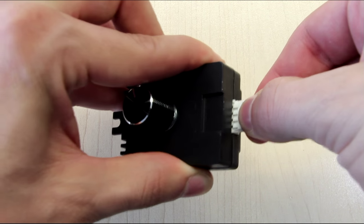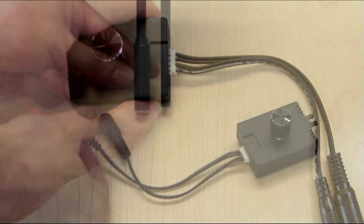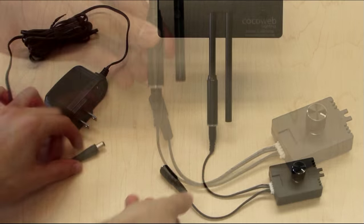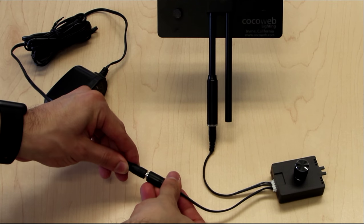Attach the four pin connector to the CocoWeb dimmer. Then connect the dimmer directly to the lamp port located under the arm and to the included wall adapter.